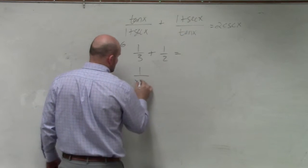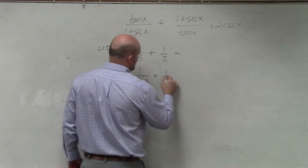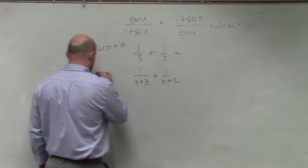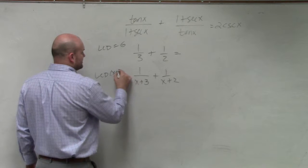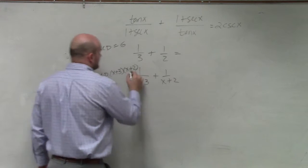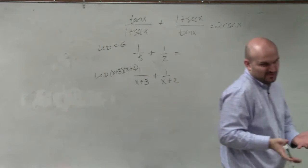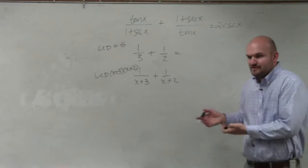Then, if I had 1/(x+3) plus 1/(x+2), the LCD is basically the product, (x+3) times (x+2). That's the easiest way—you're just taking the product of them.